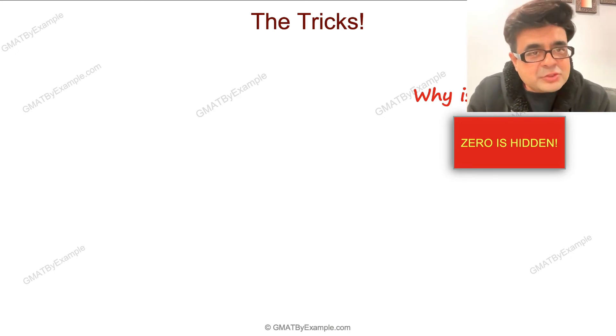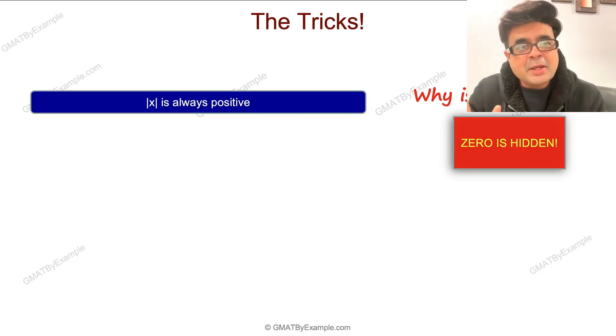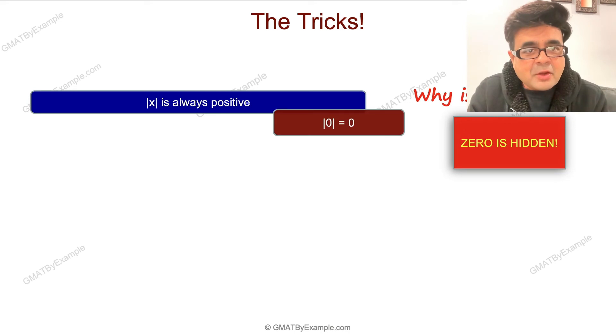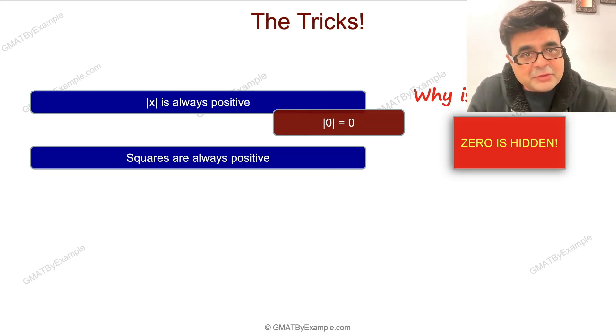I'll give you some examples on how zero is hidden and can use your biases. |x| is always positive, right? That's a true statement. Well, wrong. |0| is actually zero, and zero is neither positive nor negative. Similarly, a square is always positive, you would say, or you would think when solving a problem. However, zero squared is actually zero.